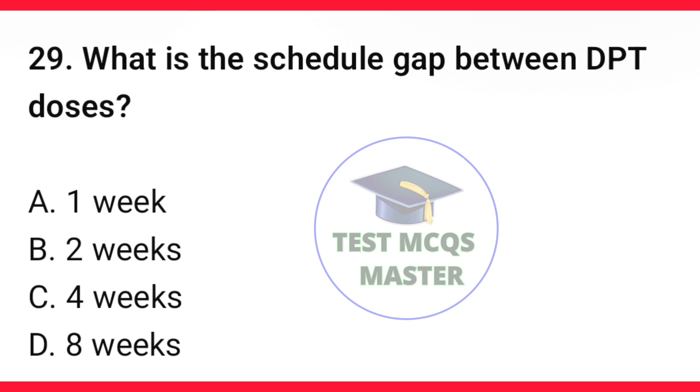Question number 29. What is the schedule gap between DPT doses? The correct option is C — four weeks.